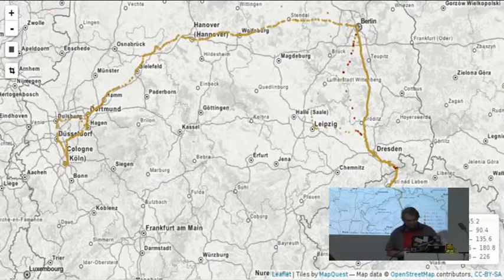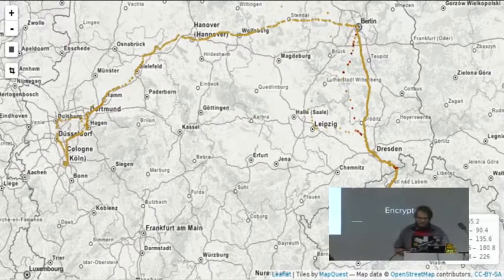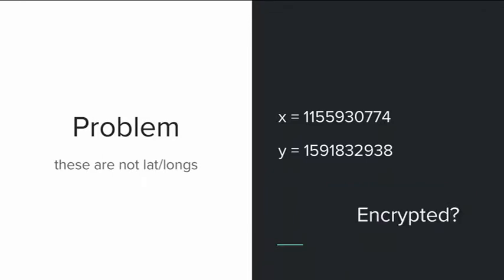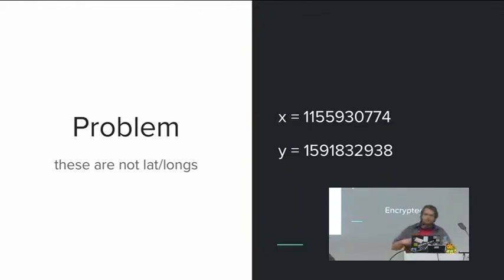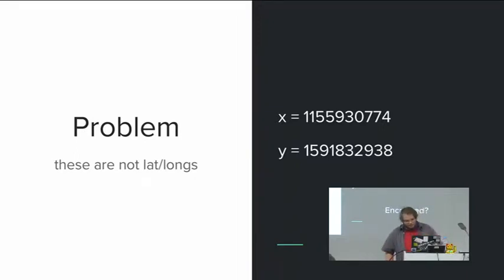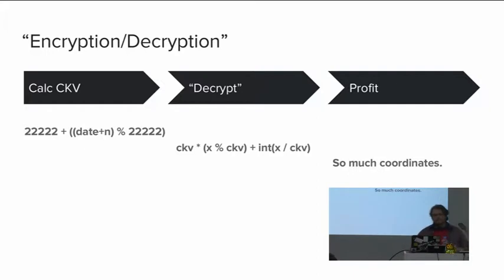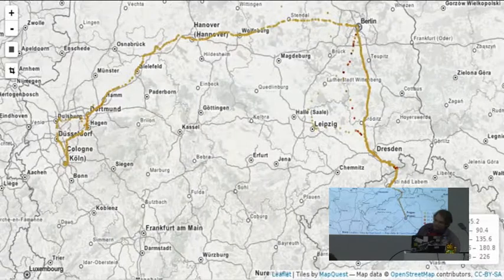We have one problem: the coordinate data we have is not standard lat/long — it's somehow encrypted. But the good news is they decrypt it in the frontend. So we disassemble a bit of the JavaScript source and find that they calculate some CKV — probably a check value — and then apply some offset. Nothing groundbreaking, just standard handling. But the great thing is, we get proper coordinates out.